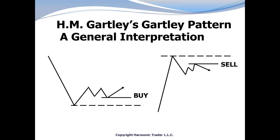For the sell setup, Mr. Gartley defined an extended rally that made an initial peak, followed by a brief reaction that resulted in a complex W-type structure that marked a retracement to sell against that initial prior peak. Although Mr. Gartley did describe the nature of this type of multiple-segmented price structure, he did not label any measured points nor apply any ratios. In fact, the Profits in the Stock Market book is an extensive technical trading book but does not mention anything about Fibonacci ratios whatsoever.